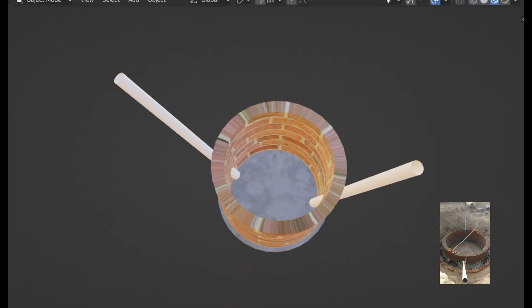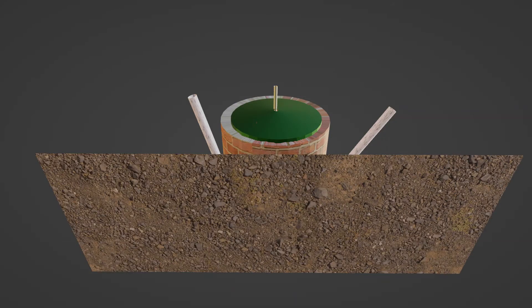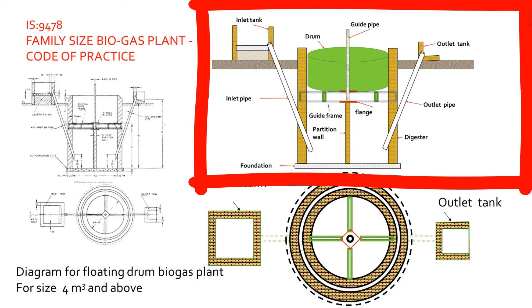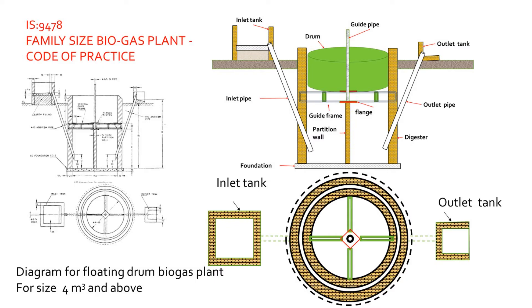Clearing the digester and pipes, we can see the foundation on which the entire plant rests. Let us also study the 2D diagram from Indian Standard code IS 9478, which gives details about the family-size biogas plant. The diagram shown is for a floating drum biogas plant of 4 cubic meters and above. The top diagram is a section view — a cross-section along a plane — and the bottom is the plan view, meaning the top view.